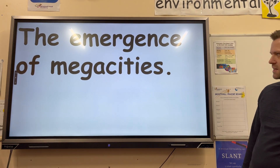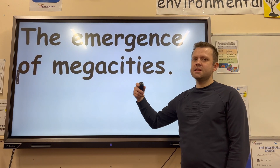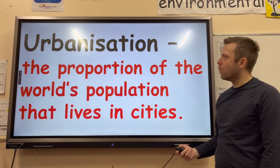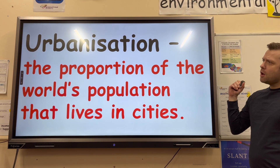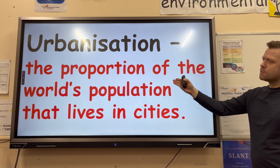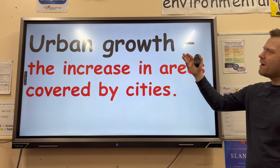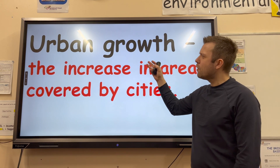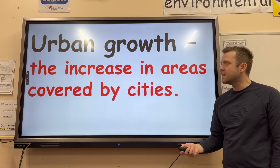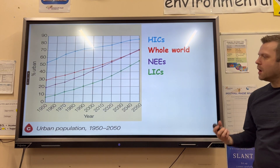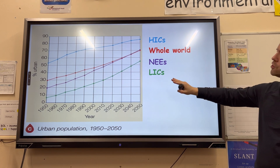The emergence of megacities — a megacity is basically a city with 10 million people or more. Quick recap: urbanization is the key term referring to the proportion of the world's population that lives in cities, whereas urban growth is the increase in area covered by cities, closely linked to urban sprawl.